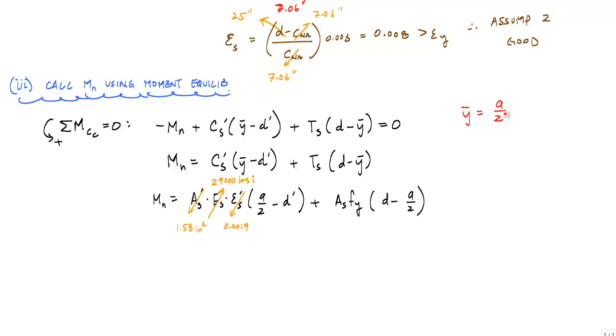Y bar equals A over 2, and A equals beta 1 times CNA. So now, if you plug and chug and solve, this nominal moment we get is 690.1 kip-feet.